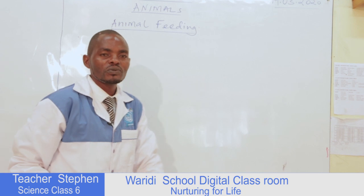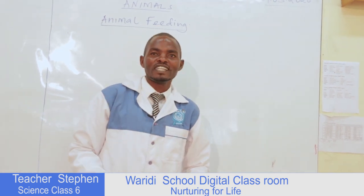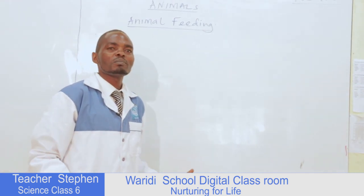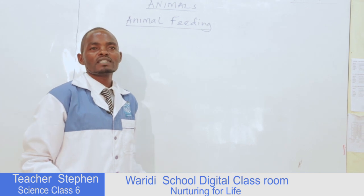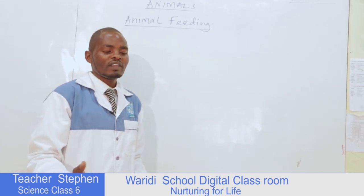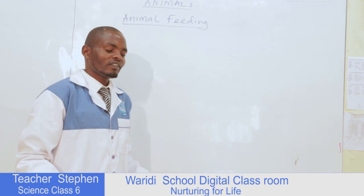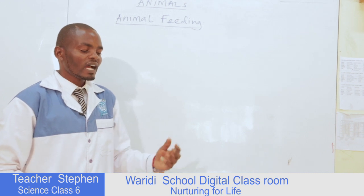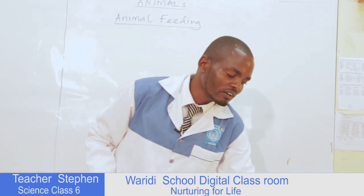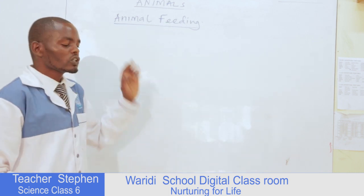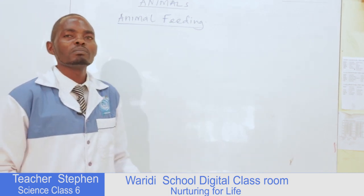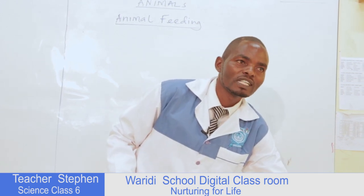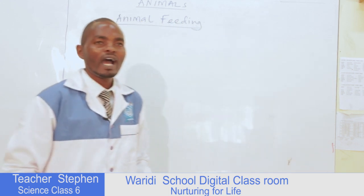The animals we have at home have to feed. When I talk of animal feeding, this is the food eaten by the animals we have — especially the domestic animals at home. We can have just a few: we have the cows, the donkeys, the camels, the goats, the sheep. These animals have to feed, and under feeding we are going to look at types of animal feeds.